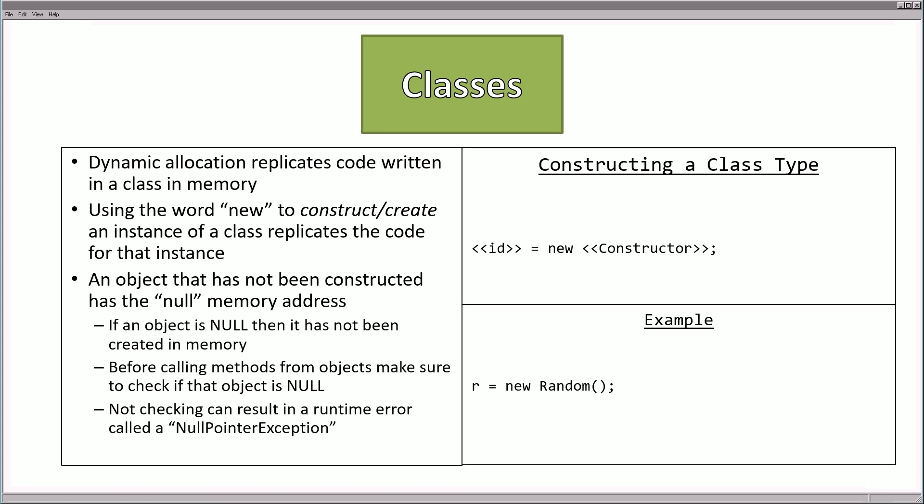We've used that before — going back to the random number generator, assigning R equals new Random is a call to its constructor and creates it in memory. An object that has not been constructed has a special memory address referred to as null. If an object is null, it has not been created in memory. Before calling methods from any object, make sure to check if that object is null first. If it is null and you try to call a method from it, it will result in a runtime error called a null pointer exception.